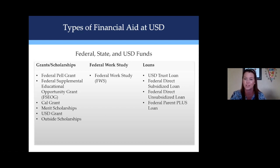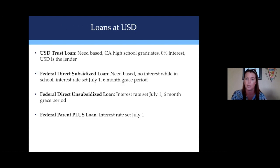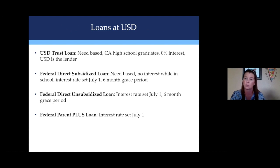We offer four different loans — three are student loans and one is a parent loan. Our USD Trust Loan is for California high school graduates, has a zero percent interest rate, and USD is the lender. The Federal Direct Subsidized Loan is also need-based with no interest while you're in school; the interest rate is set by the Department of Education in July every year, and there is a six-month grace period after graduation. The Federal Direct Unsubsidized Loan has interest accruing while you're in school. And we offer the Federal Parent PLUS Loan, taken out by the parent on the student's behalf.